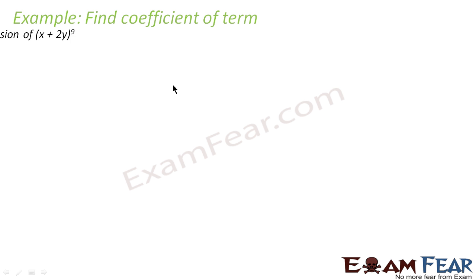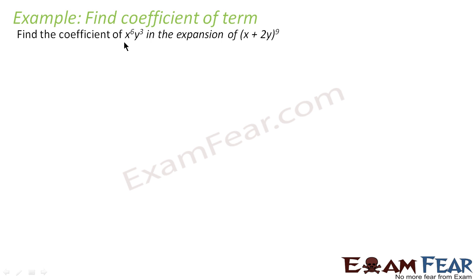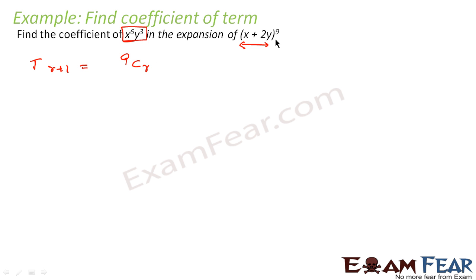The next question is: we have to find the coefficient of x^6 · y^3 in the expansion of (x + 2y)^9. We first write the general term T(r+1) = 9Cr · x^(9−r) · (2y)^r. Here n = 9.